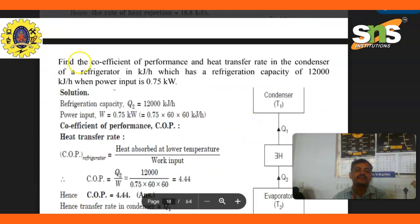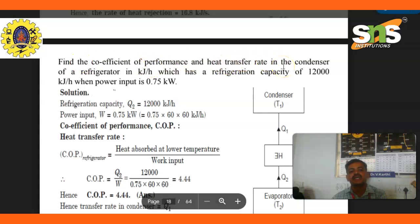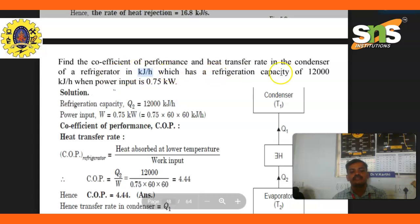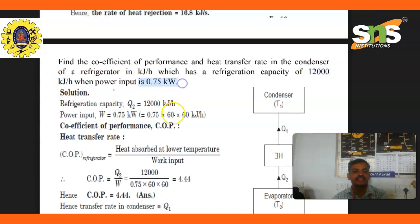Second problem: Find the coefficient of performance and heat transfer rate in the condenser of a refrigerator in kilojoules per hour, which has refrigeration capacity of 12,000 kilojoules per hour and power input 0.75 kilowatts.